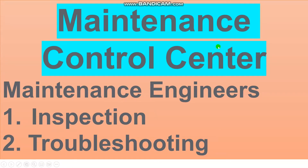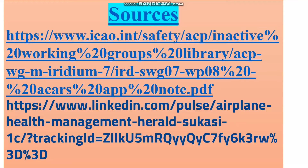The data and information from the onboard systems go to the Maintenance Control Center on the ground. The Maintenance Control Center then informs maintenance engineers to prepare for inspection, troubleshooting, and replacement, and to prepare any replacement units from stores.